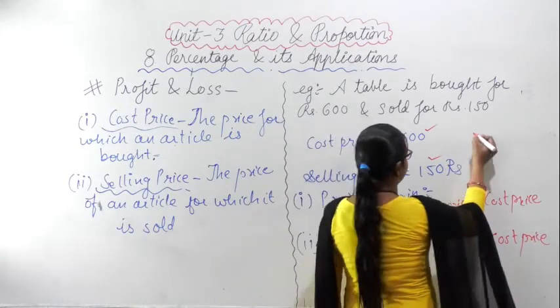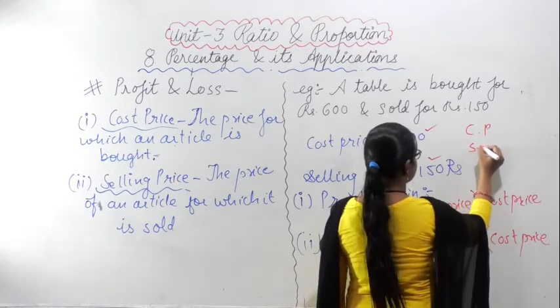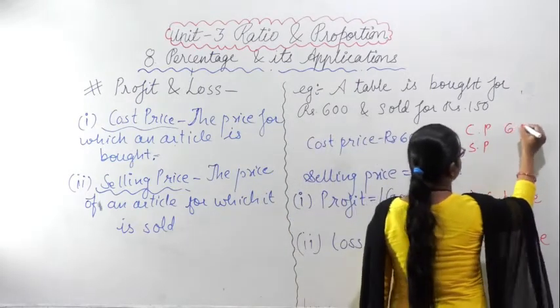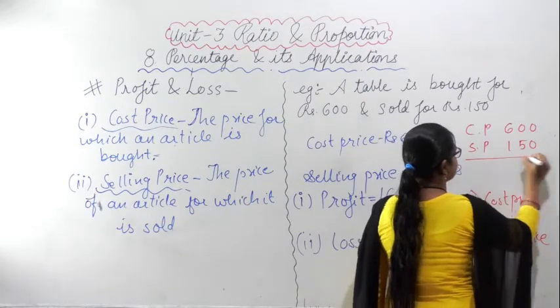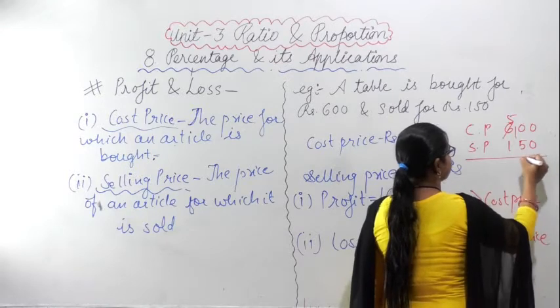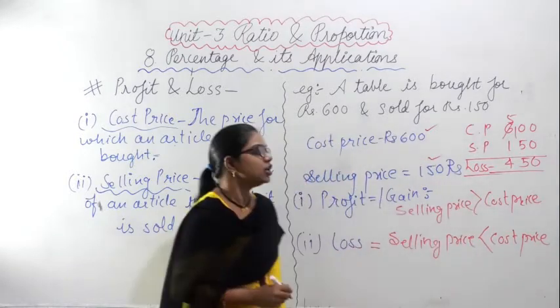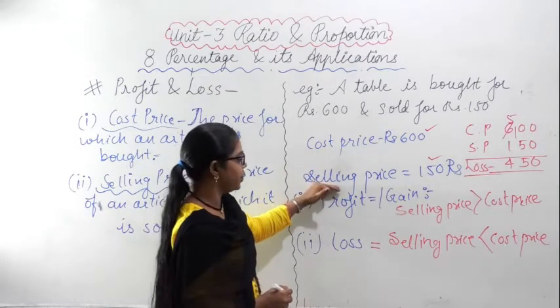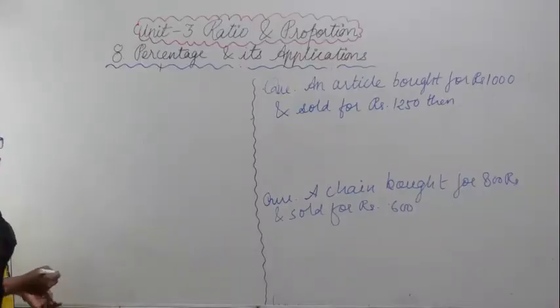The cost price is Rs. 600 and the selling price is Rs. 150. Since cost price is greater than selling price, you get a loss of Rs. 450. So this is the condition of loss.